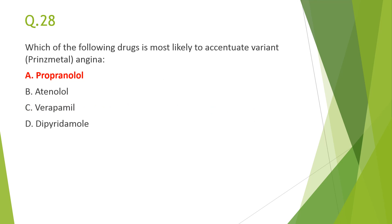Next: the drug most likely to accentuate variant or Prinzmetal angina is propranolol. As a non-selective beta blocker, propranolol blocks both beta-1 and beta-2 receptors, preventing coronary vasodilation, while alpha receptors remain unblocked, allowing alpha-receptor-mediated coronary constriction. Since the pathology in variant angina is coronary vasospasm, propranolol accentuates it and should not be given.